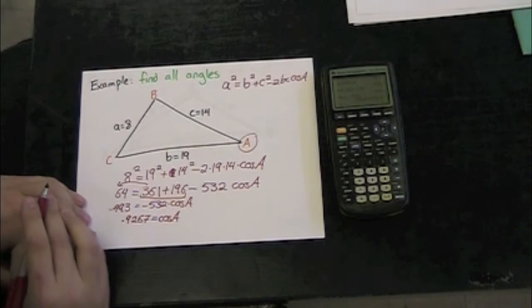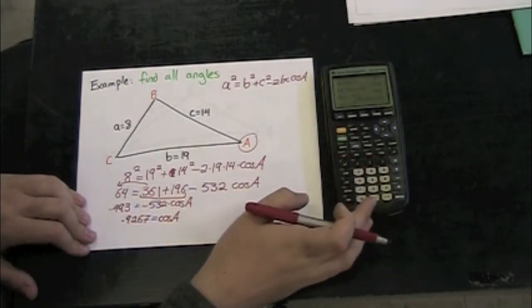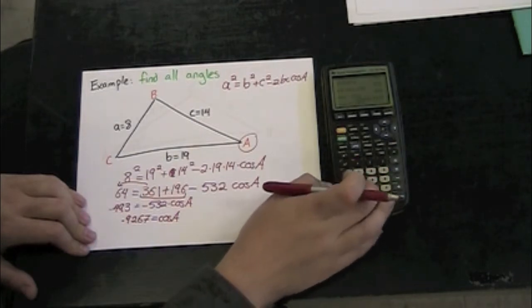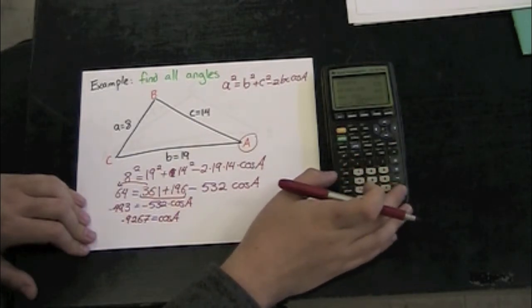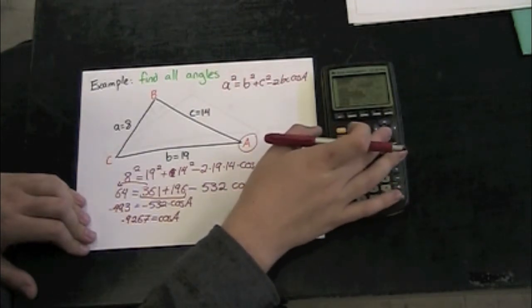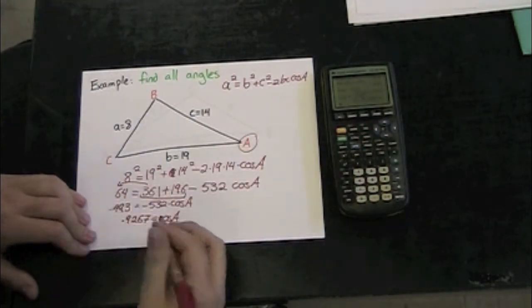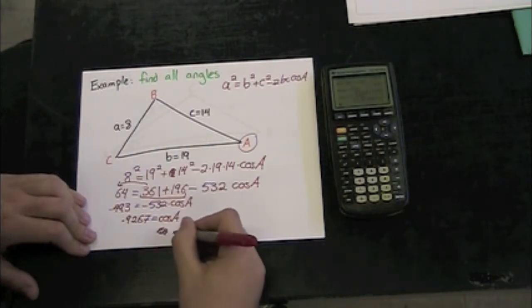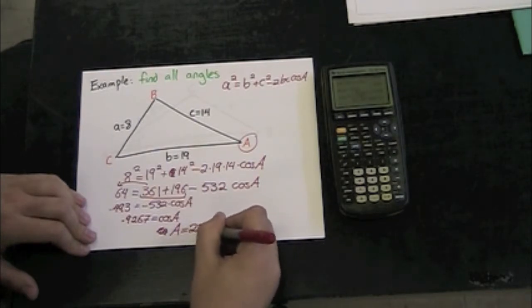Let's take the arc cosine of both sides. So inverse cosine of 0.9267, and I'm going to make sure that my mode is set to degrees, which it is, and I get angle A, the measure is going to be 22.07 degrees.